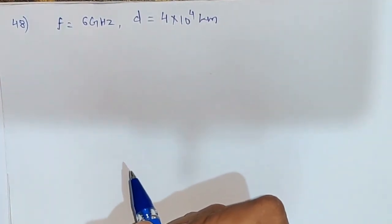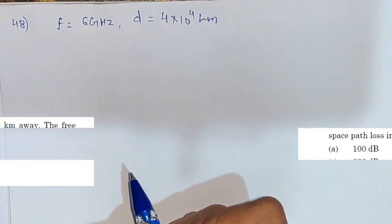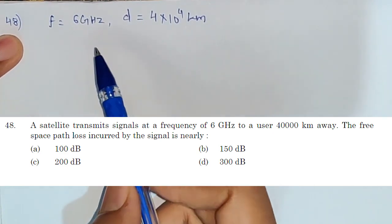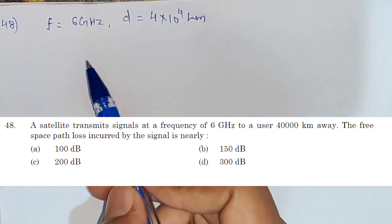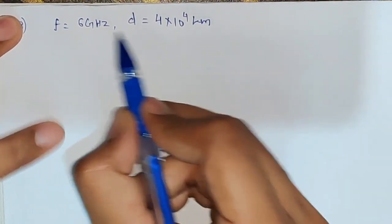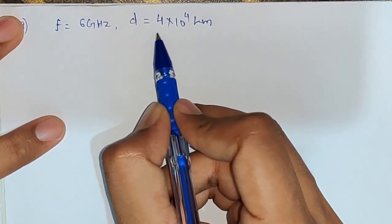Hello friends, welcome to GateGyam. We are going to discuss question number 48 from ISRO 2018 paper. In this question, he is asking us to calculate the free space path loss. Frequency is given and the distance is given.